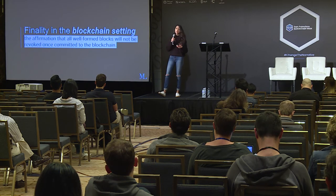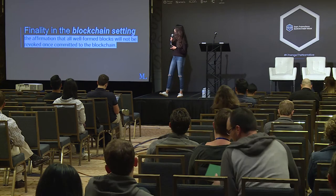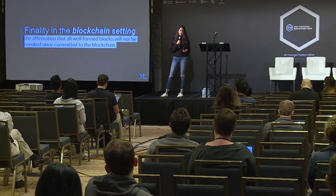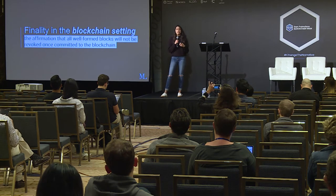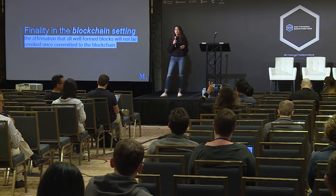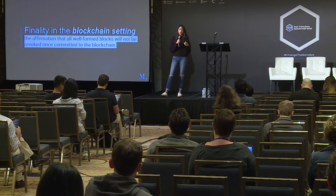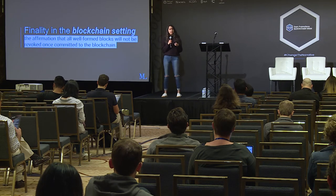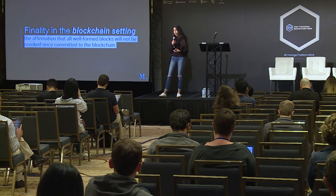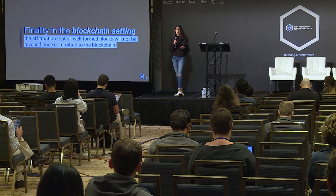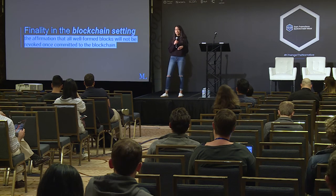But what's finality in the blockchain setting? Finality in the blockchain setting is the affirmation that all well-formed blocks will not be revoked once committed to the blockchain. It means that as a user transacting on the blockchain, it's imperative to make sure that once I make some sort of transaction, I have this affirmation that the transaction won't be revoked. In the current scheme, we know that in the Bitcoin blockchain, there's susceptibility to 51% attacks or selfish mining attacks, and this can sometimes harm finality.